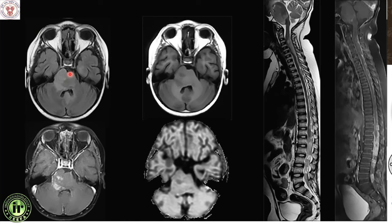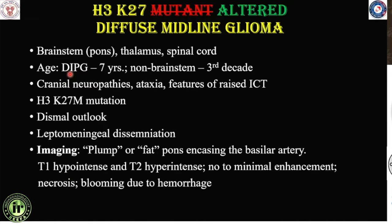Midline gliomas classically manifest in the brainstem or midline-adjacent structures like the thalamus, basal ganglia, or spinal cord. The mutation associated with midline gliomas is H3 K27, but the tumor is now called H3 K27-altered rather than mutant, as additional mutations may be present. DIPG typically presents at around seven years of age, while supratentorial midline gliomas manifest in the third decade. These tumors have a dismal median survival of nine to twelve months, and leptomeningeal dissemination is common, necessitating complete craniospinal axis imaging.